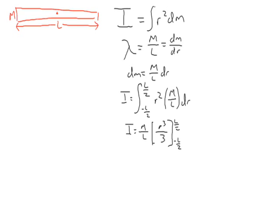Now we evaluate the integral. So we have m over l times l over 2 cubed, so l cubed over 24 plus l cubed over 24. Note it's minus a negative. The l's cancel, and I equals m l squared over 12.